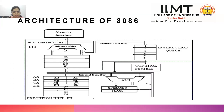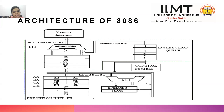Now coming to the architecture of the 8086. The architecture is divided into two parts: BIU and EU. BIU stands for Bus Interface Unit and EU stands for Execution Unit. The bus interface unit fetches data from memory and puts it into the instruction queue, while the execution unit takes data from the instruction queue, executes it in the ALU, and provides the result.